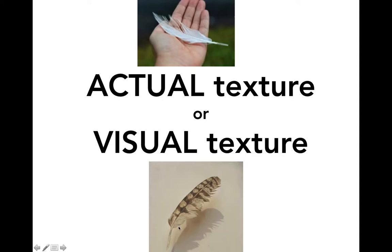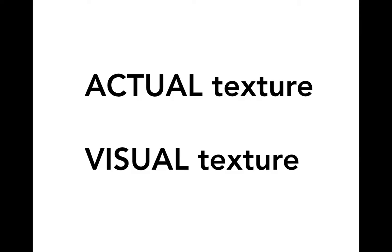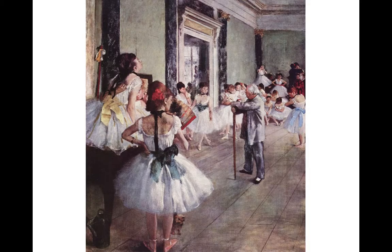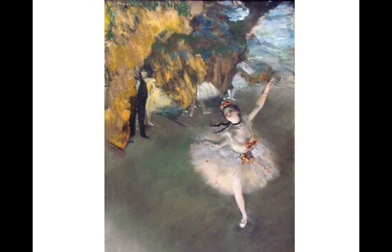That is an example of what we call visual texture. Now there was an artist named Edgar Degas — he was fascinated with ballerinas and he would paint them. His paintings are in many of the most famous museums in the world. A few things he did in his painting was to use emphasis, where he would emphasize where he wanted you to look, by maybe in this case making this girl lighter in color than everybody else.